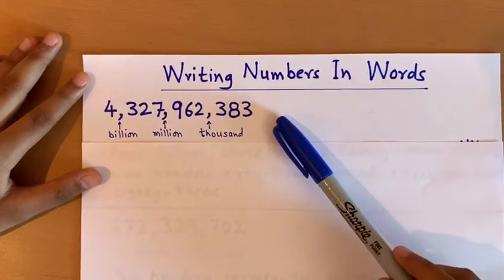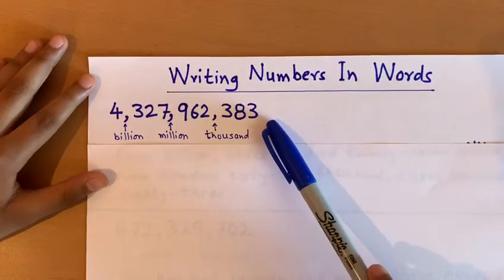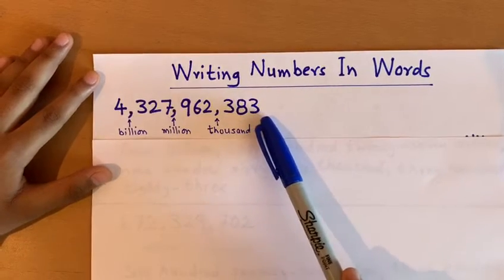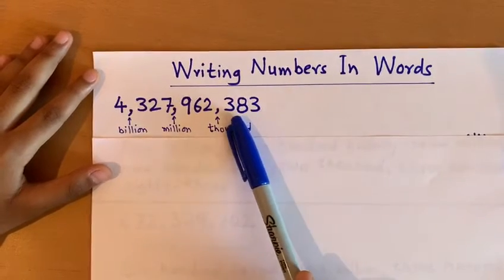If you don't know where to put commas, every three digits from right to left, we put one comma.